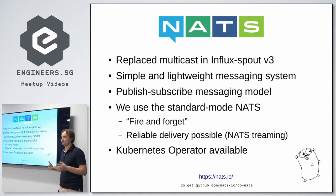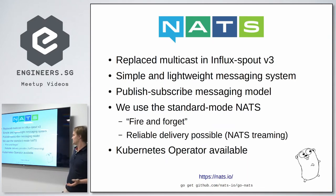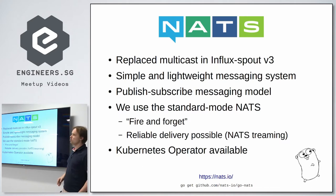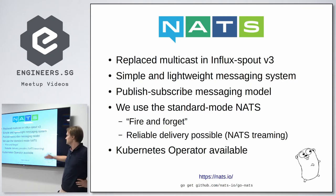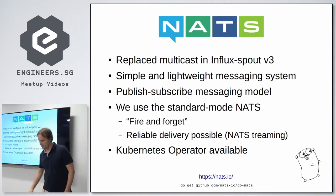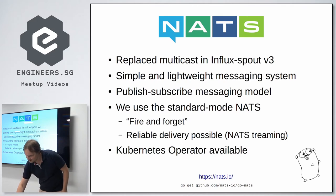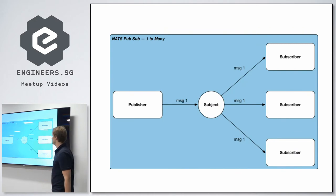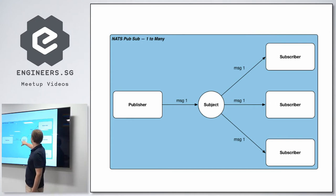We decided to do a third iteration using NATS — a simple, lightweight messaging system with a nice publish/subscribe messaging model. We're using the standard mode, not NATS Streaming. Our metrics are best-effort, and we collect a lot via UDP. We find very few drops, so this is fine for us. There's also a nice Kubernetes operator for building clustered NATS instances. The previous talk covered NATS well, so I won't go into too much detail.